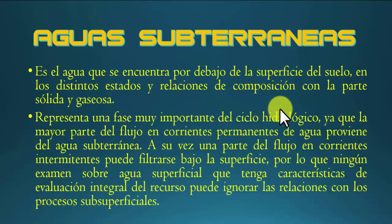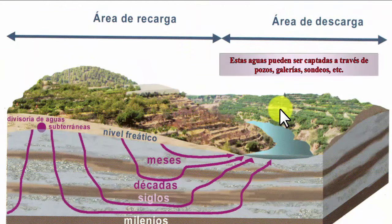Una parte del flujo en corrientes intermitentes puede infiltrarse bajo la superficie, por lo que ningún examen sobre agua superficial con características de evaluación integral del recurso puede ignorar la relación con los procesos subsuperficiales. Cuando hablamos de aguas subterráneas, no solamente hablamos del agua que se infiltra cuando hay lluvia, sino también que constantemente hay acuíferos alimentados por procesos de infiltración de cuerpos de aguas superficiales como lagos y ríos que alimentan acuíferos en la misma zona de influencia.